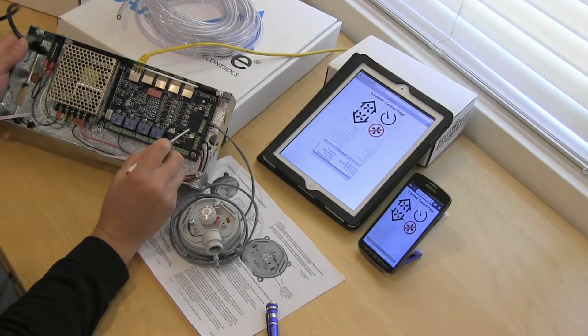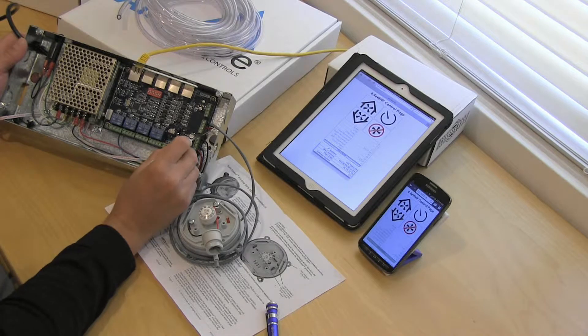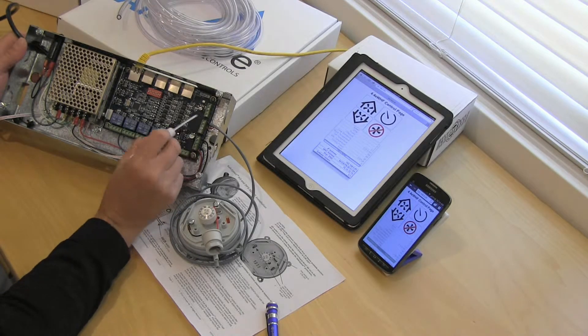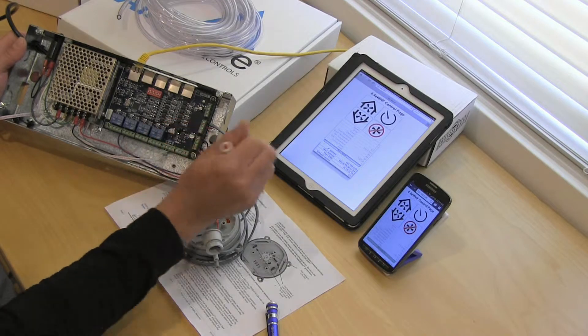And there we go. We've got the DPS sensor wired in. The red wire is on P6 number 3 and the black wire on P6 number 4.